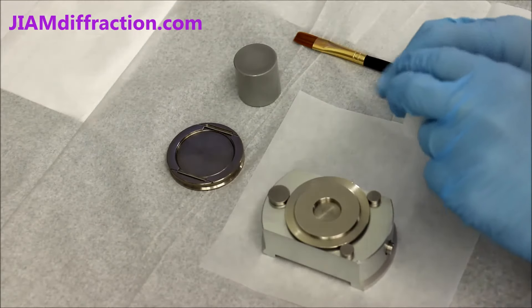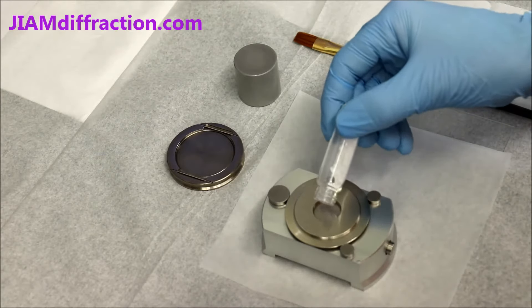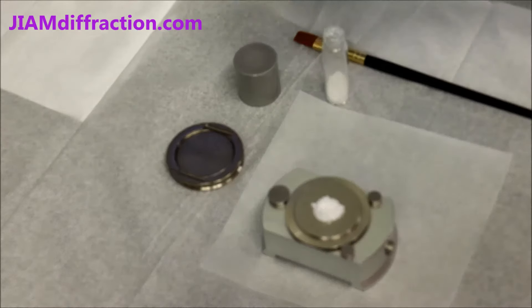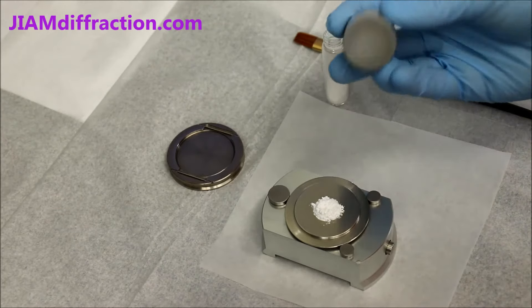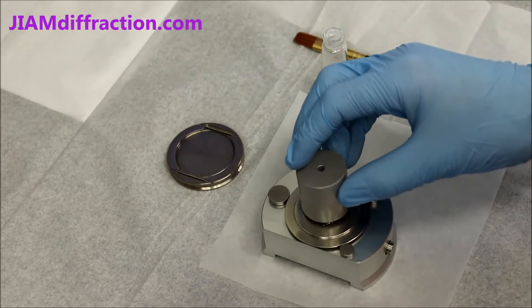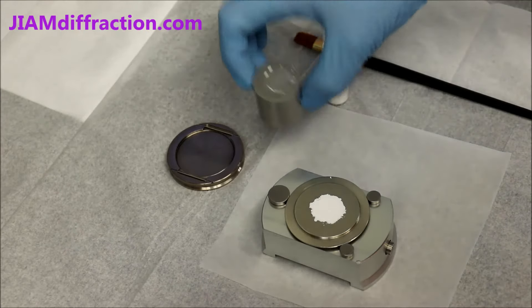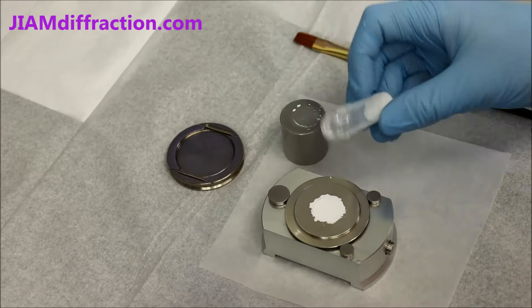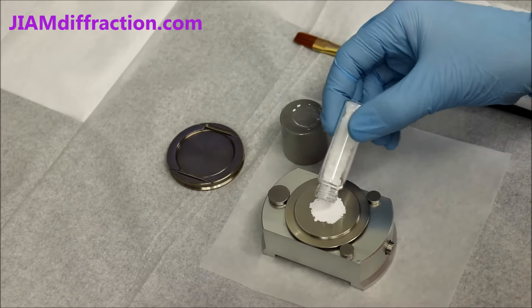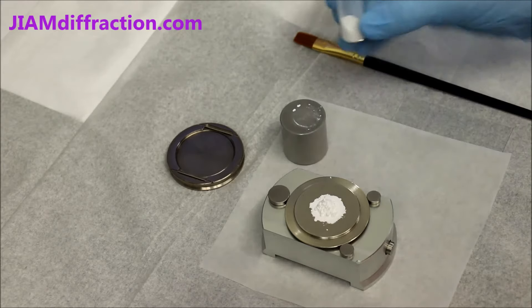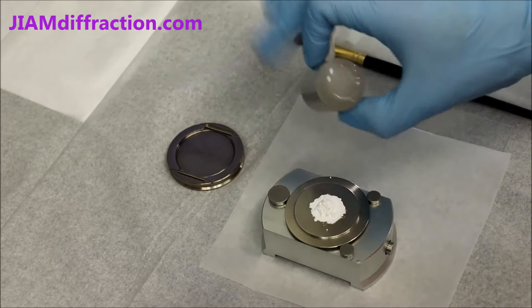We then take our sample and fill the well, and we will actually overfill it. I'll then take the pressing block, press down firmly and evenly, then add a little bit more powder, and press down again.